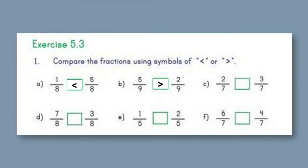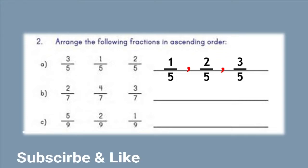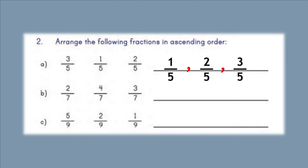Question number two: arrange the following fractions in ascending order. Jis fraction ka numerator chota hoga wo fraction bhi choti hogi. Ascending order mein pehle choti, phir badi. Gaur karen: 3/5, 1/5, 2/5 — ascending order mein yeh banti hai: 1/5, 2/5, 3/5. Parts B aur C aapne khud karne hain.